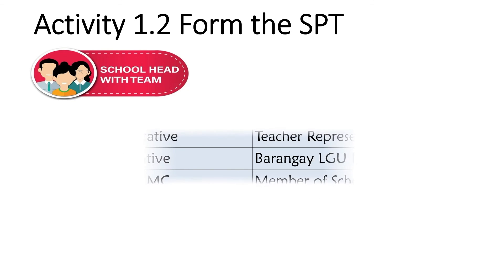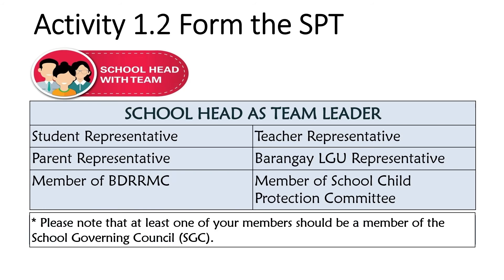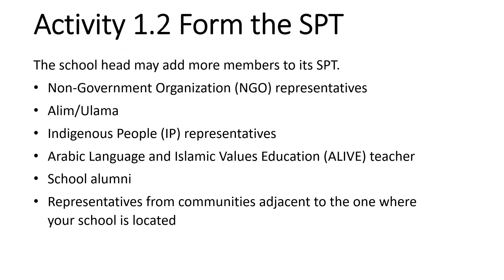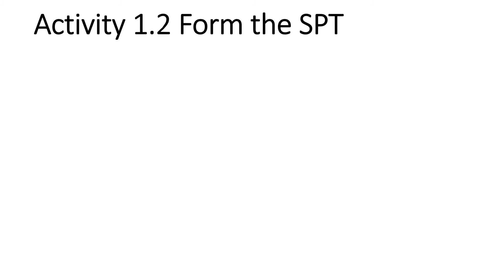Now, form the SPT — the School Planning Team. The representatives include: the school head as team leader, a student representative, a teacher representative, a parent representative, a barangay or LGU representative, a member of the BDRRMC, and a member of the school child protection committee. At least one member should be a member of the school governing council. The school head may add more members, such as non-government organization representatives, Alim or Ulama representatives, indigenous people representatives, ALIVE teachers, school alumni, and representatives from communities adjacent to the school.